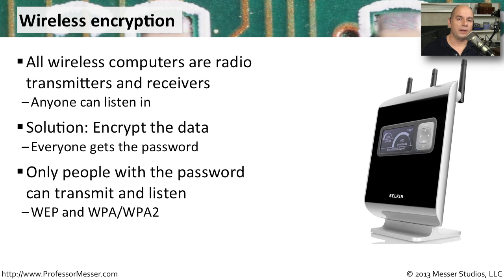There are two different kinds of encryption methods. One that you should not be using any longer, but is still available on some very old equipment, is WEP. The latest type of encryption, and the kind you usually find today on all of the latest infrastructure devices, is WPA2.